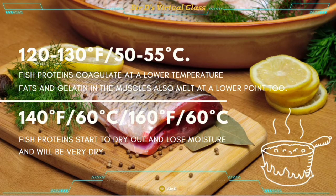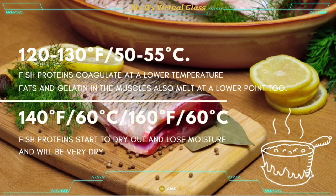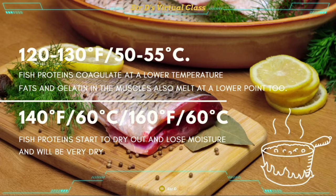Now you can see here the cooking temperatures. 120 to 130°F or 50 to 55°C is ideal for fish proteins to coagulate at a lower temperature as mentioned. Fats and gelatin in the muscles also melt at a lower point. Take note: 140°F or 60°C begins to make fish protein dry and it loses its moisture. Going up to 160°F or 71°C, the fish will be very dry. Although ideally the cooking temperature would be 120 to 130°F, there are varieties of thick-skinned fish that are ideally cooked at higher temperatures of 140 to 160°F or 60°C and above.